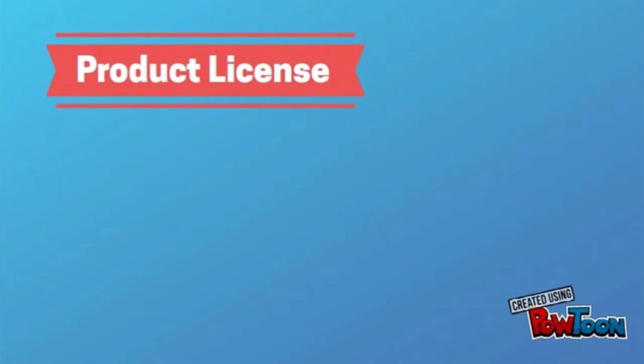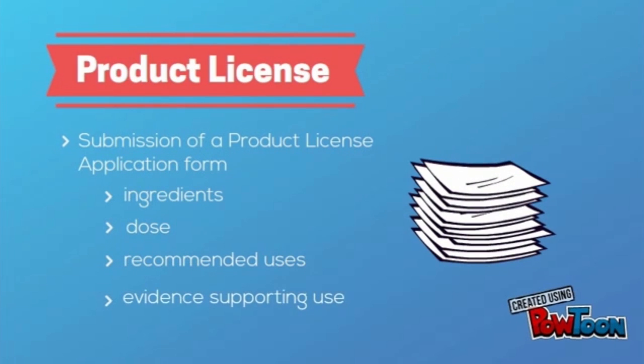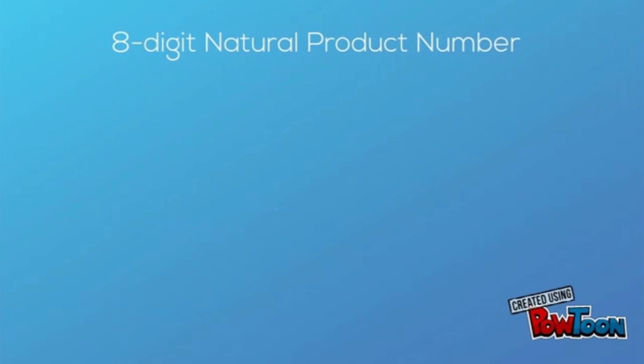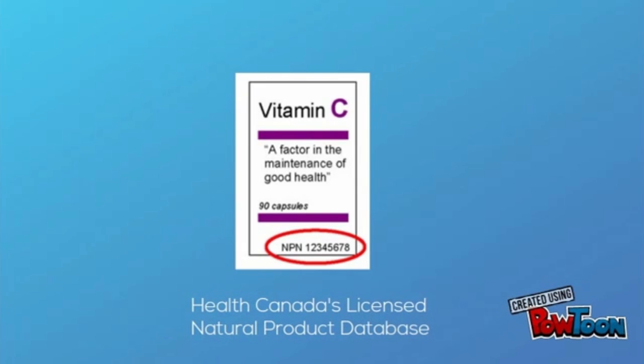A product license is obtained by submission of a PLA. This includes information such as ingredients, dose, recommended uses, and evidence supporting its use. An eight-digit natural product number is established on the label. The vitamins can be found in the Natural Health Products database.